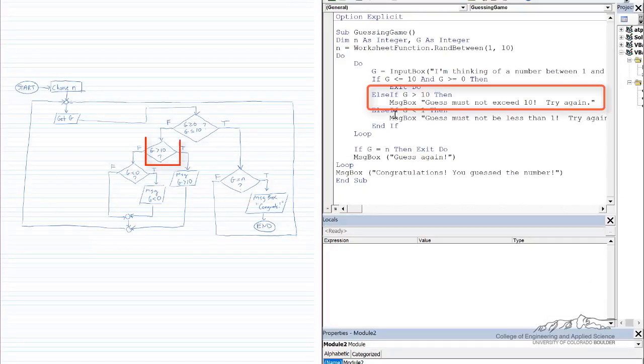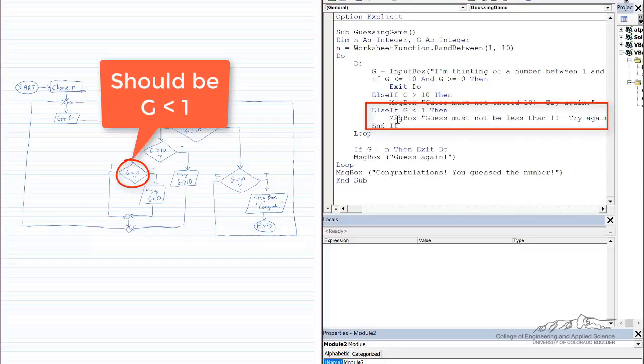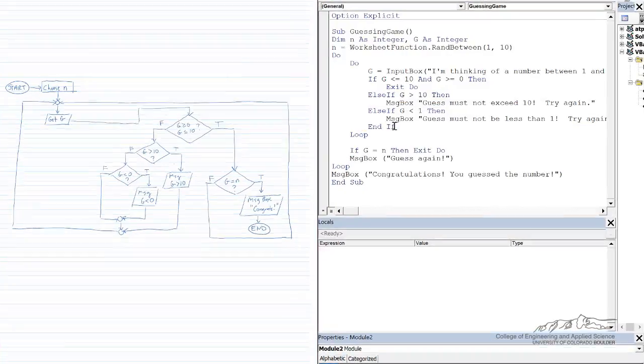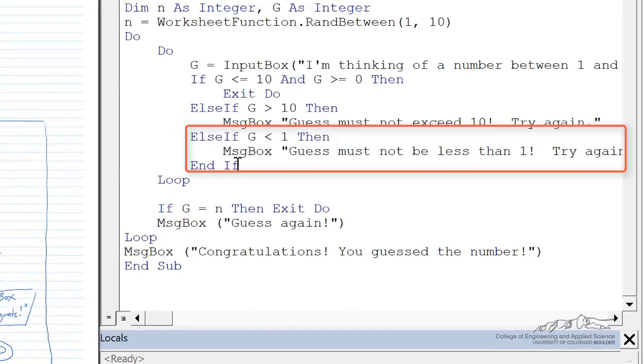If we don't satisfy both of those conditions, then we check to see if G is greater than 10. If that's the case, we message box something like, guess must not exceed 10. Otherwise, if G is less than 1, we message box something like, the guess must not be less than 1, please try again.